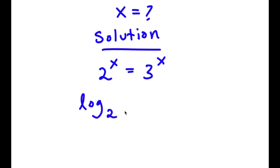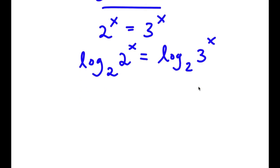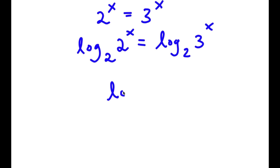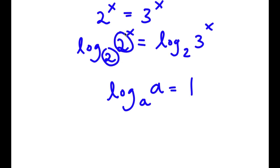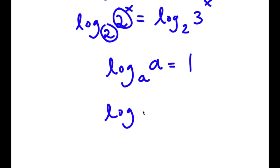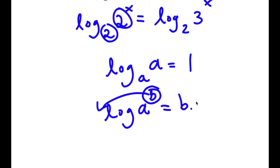So now I have log base 2 of 2 to the power of x is equal to log base 2 of 3 to the power of x. Now, if I have something in the form log base a of a, this is simply equal to 1. And if I have something in the form log base a of something to the power of b, I can move this exponent b to the front, so it equals b times log a.